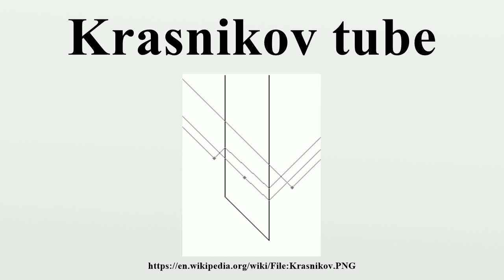But now that two Krasnikov tubes are in place, astronauts from the future can travel to the star in tube 2, then to Earth in tube 1, and will arrive 6,000 years earlier than the departure. The Krasnikov tube system has thus become a time machine.